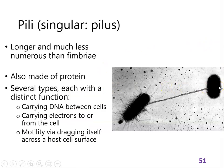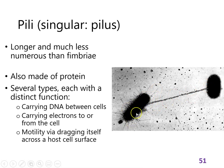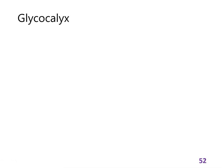Pili — the singular is pillus — are like fimbriae, but sometimes thicker and much longer, and there would only be one or two per cell. They have different functions depending on the type. They can carry DNA between cells — so this cell might be injecting a plasmid with an antibiotic resistance gene into another cell. Some cells use pili to move electrons out of the cell towards an electron-accepting molecule, which we'll discuss in Lectures 3 and 4. And some of them drag themselves across a surface using a pillus.